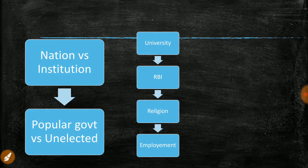The first article is about nation versus institution. Most central universities have been applying the Indian Civil Services Conduct and Rule, which means professors cannot write or speak against the government or its policies. This limits free speech and prevents professors from publishing in newspapers criticizing any policies — thereby curtailing freedom of expression.